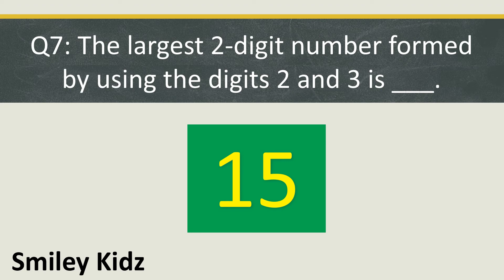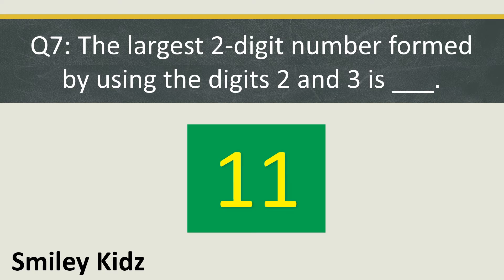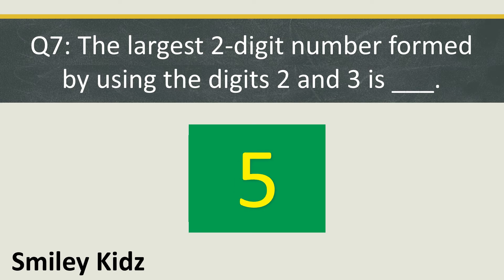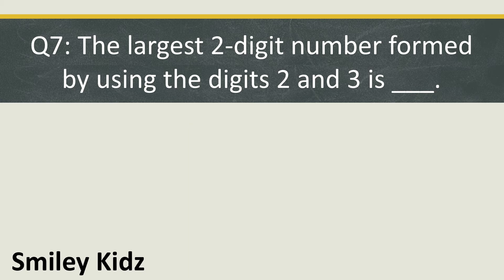Question number 7: The largest two-digit number formed by using the digits 2 and 3 is... Your time starts now. Your time is up. The right answer is 32. The largest two-digit number formed by using the digits 2 and 3 is 32.